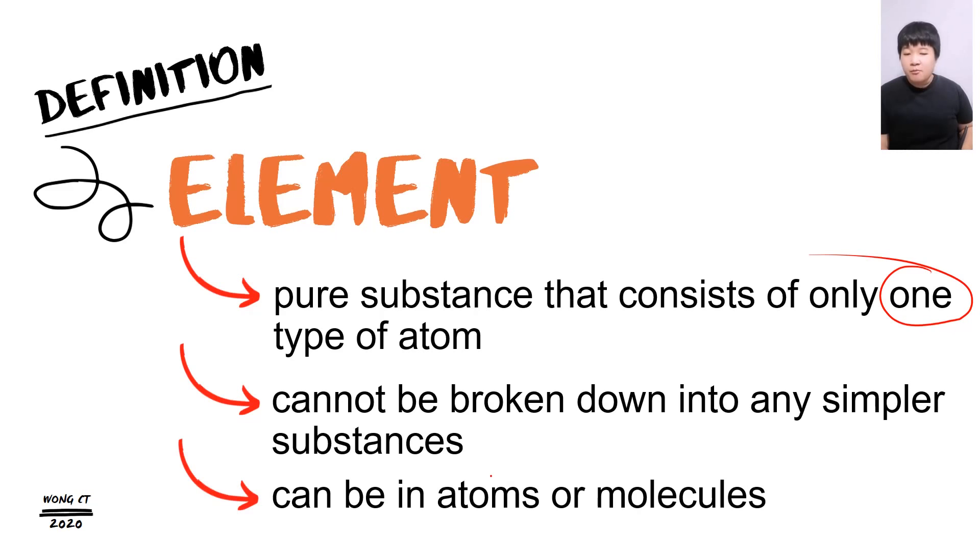Element can be in the form of atoms or molecule. Example of atoms are like sodium, neon, argon. All these are atoms. Molecule could be like oxygen gas, nitrogen gas, chlorine gas.